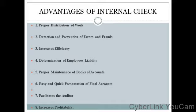The second advantage is detection and prevention of errors and frauds. The main object of internal check is to minimize the occurrence of errors and frauds. As no individual person does the work from beginning to end, and the work of one person is checked by another, there is less chance for errors and frauds to occur. And even if they arise, they can be detected very easily.